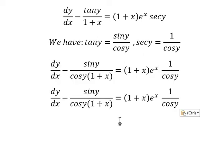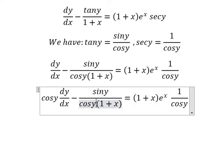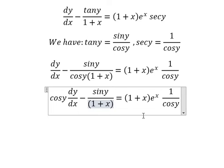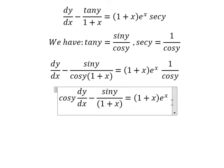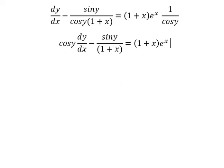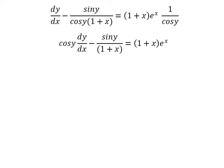Now we need to multiply both sides by cosine y. Next, we can use substitution.